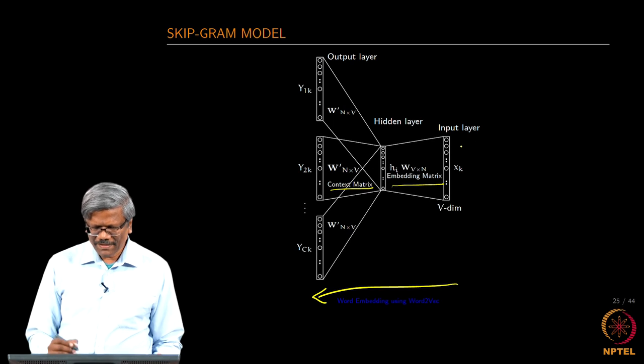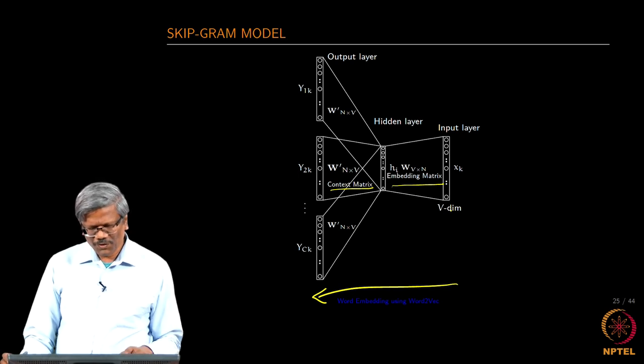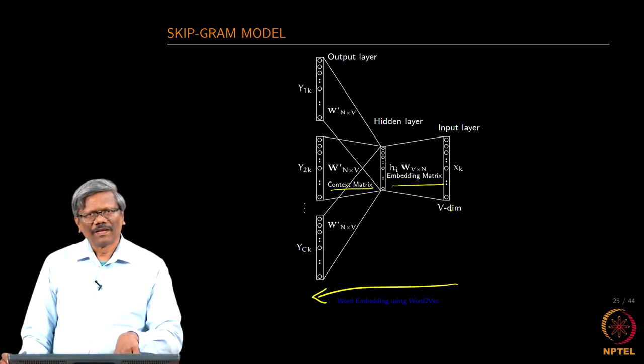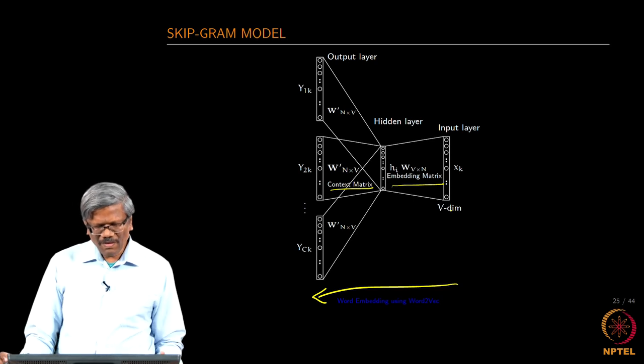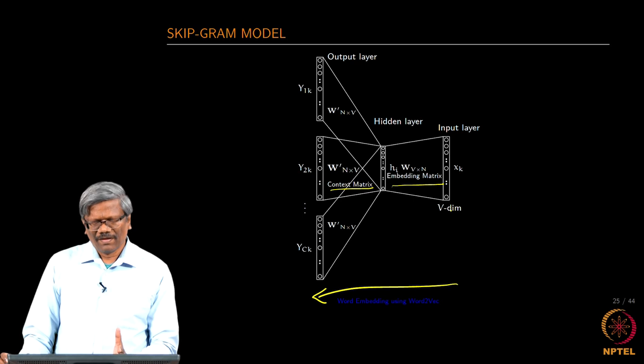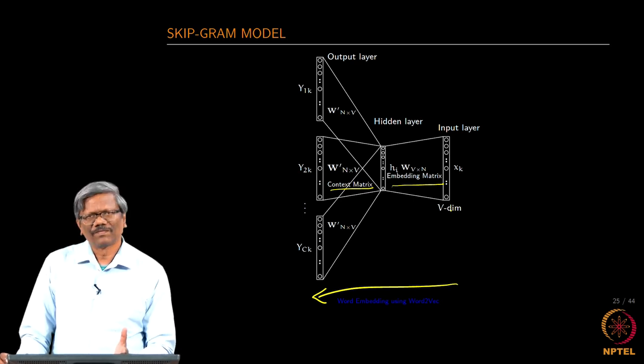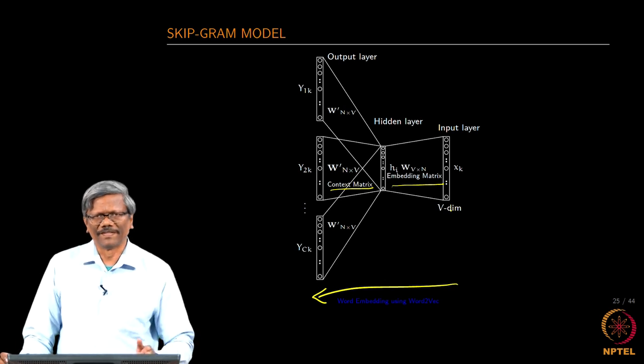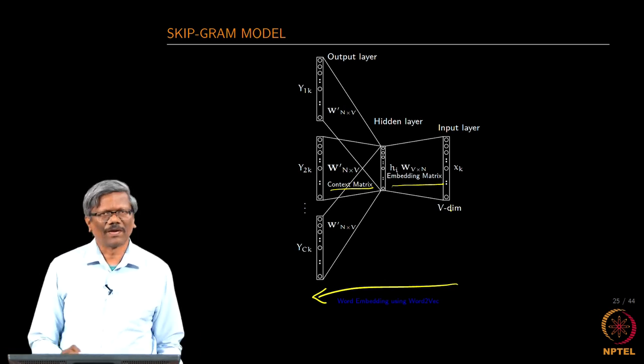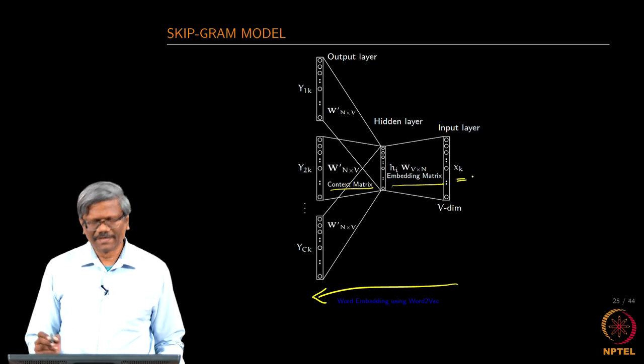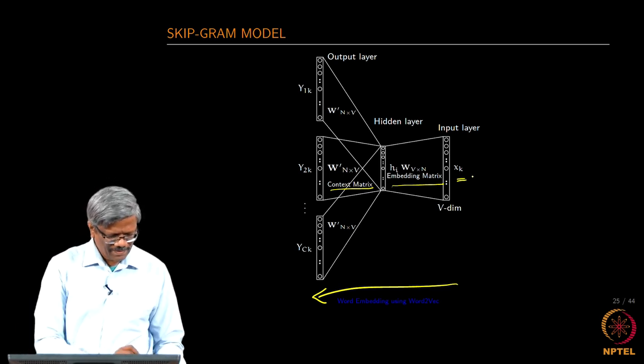What happens here in this skip gram model, when we provide the input we assume that the word that is output would be its context words, if not we go back and keep adjusting the weights and so on right. Until the word gets its context right alright.